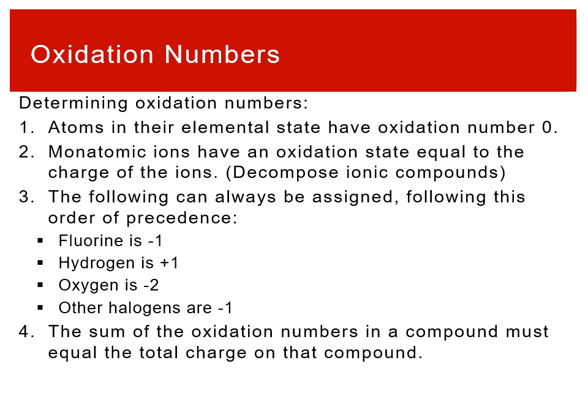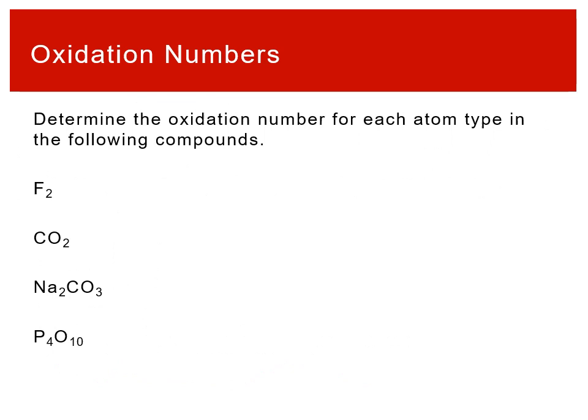The final rule is that the sum of all oxidation numbers in a compound must equal the total charge of that compound. For a neutral molecule, oxidation numbers sum to zero; for an ion, they sum to the ion's charge. We use this to solve for atoms like carbon that aren't covered by the preference rules.